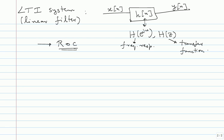From an implementation point of view, you would typically want h of n to be causal and stable. Causal means it is zero for n negative, but in digital systems that is too restrictive because you can store data. So we will restrict ourselves to right-sided sequences — h of n will go to zero eventually for sufficiently negative indices. You can implement such filters by simply delaying: shift to the right as long as you want, then implement a causal version. You will get the exact response you want.